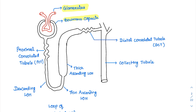The Bowman's capsule is there — it is shaped like a ball. Below the Bowman's capsule, the proximal convoluted tubule is present. Whenever there are convolutions or a zigzag kind of arrangement, that is called a convoluted tubule. So this first one is the proximal convoluted tubule.